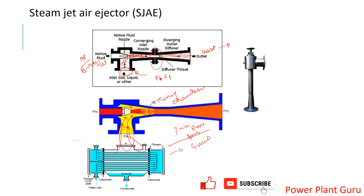The high-velocity steam-gas mixture passes through the throat very fast, creating the low-pressure area needed to draw non-condensable gases from the condenser. After the throat, there is a divergent nozzle (diffuser) where velocity decreases and pressure recovers. Physically, the ejector is installed horizontally — not vertically — and this is how the complete ejector system works.